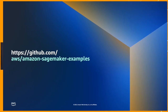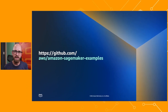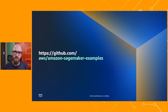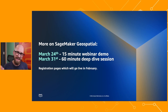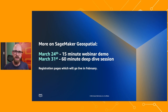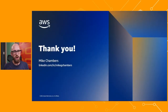That's just a quick view of the new geospatial capabilities inside of SageMaker, both inside SageMaker Studio and inside the actual notebooks themselves. If you want to look at those notebooks, you can get them from github.com/aws/amazon-sagemaker-examples. If you want to know more about the geospatial capabilities inside of SageMaker, there are more sessions coming up on March the 24th — a 15-minute webinar demo — and on March the 31st, a 60-minute deep dive into the technology. Look out for the registration pages going live in February. Thank you so much for taking the time to have a look at geospatial machine learning inside of SageMaker. I'm Mike Chambers, and I'll see you next time.